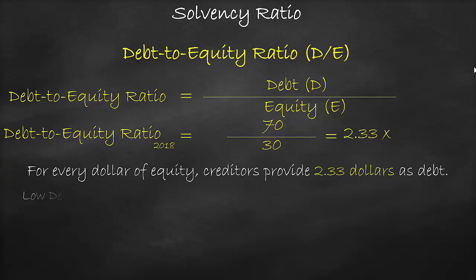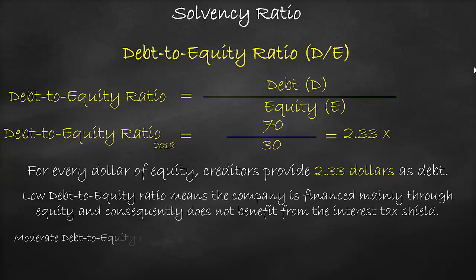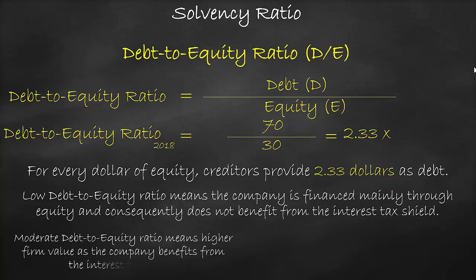A low debt-to-equity ratio means that the company is financed mainly through equity, and consequently does not benefit from the interest tax shield. A moderate debt-to-equity ratio means a higher firm value as the company benefits from the interest tax shield.